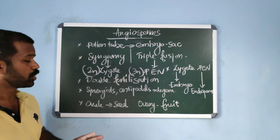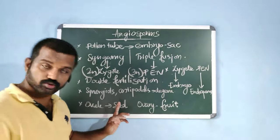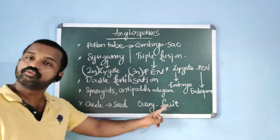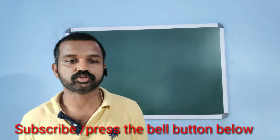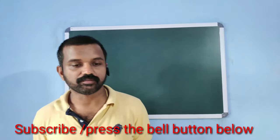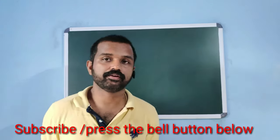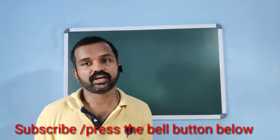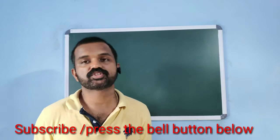After fertilization, synergids and antipodals degenerate. The zygote develops into the embryo, and the primary endosperm nucleus develops into the endosperm to nourish the developing embryo. The ovule develops into the seed, and the ovary develops into the fruit. This concludes Plant Kingdom Part 3; a small remaining portion will be covered in a separate video.